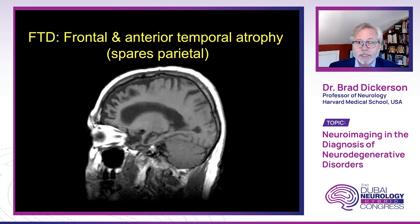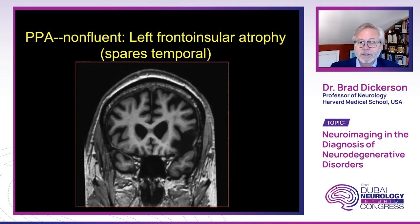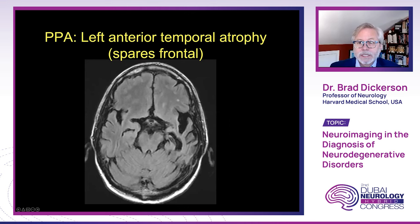Here's a case of frontotemporal dementia where, from the sagittal perspective, you can see striking frontal and anterior temporal atrophy that spares the posterior cortex. Here's a patient with primary progressive aphasia with a semantic presentation due to frontotemporal lobar degeneration TDP-43 type, with asymmetric ventral and lateral temporal atrophy. And here's a patient with non-fluent primary progressive aphasia with left fronto-insular and dorsolateral prefrontal atrophy, sparing the temporal pole.